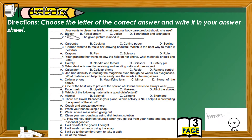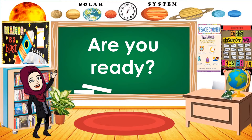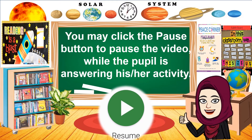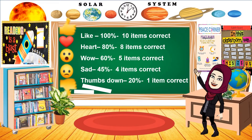Okay, let's answer — let's try. Directions: Choose the letter of the correct answer and write it in your answer sheet. Are you ready? I'm giving you 1 minute to answer the activity. Now, let's evaluate your score. Light — 100% if 10 items are correct. Heart — 80% if 8 items are correct. Wow — 60% if 5 items are correct. And sad — 45% if 4 items are correct. Thumbs down — 20% meaning 1 item is correct.